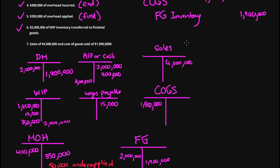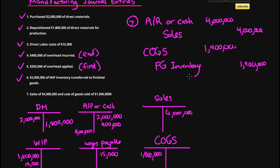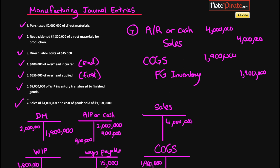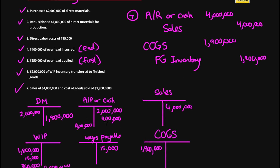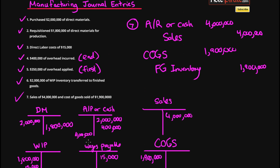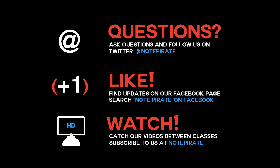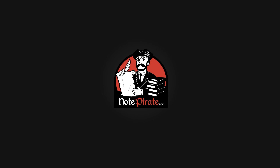You should always maintain T-accounts since it's a good idea to track the posting of all transactions to each account balance. In the next tutorial I'll be talking about what happens to the under-applied or over-applied overhead amounts — whether we write it off or prorate it towards inventories, which is a bit complex. Thanks for watching; if you have questions you can tweet us at Note Pirate or like us on Facebook to receive updates.